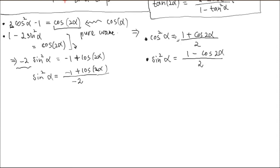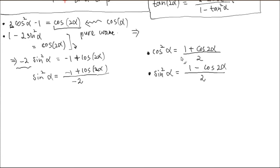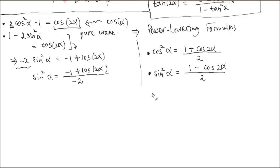What this says is that if you have cosine α multiplied by itself — cosine to the second power — you can change it into a pure wave, a cosine to the first power. Similarly for sine squared. They call this the power-lowering formula. If you have cosine squared α, instead of that high power, you deal with the first power. It has a great advantage in calculus when you calculate things.